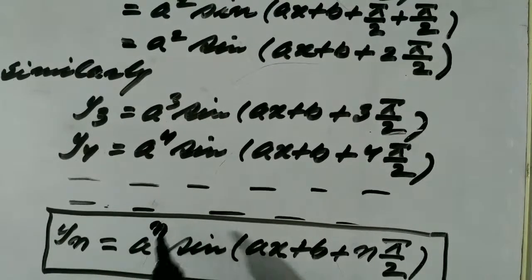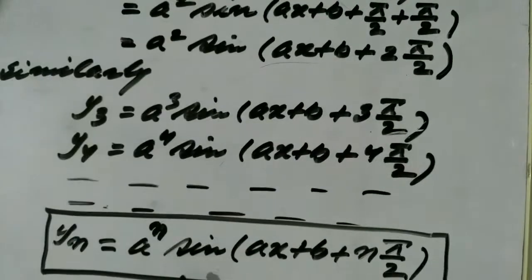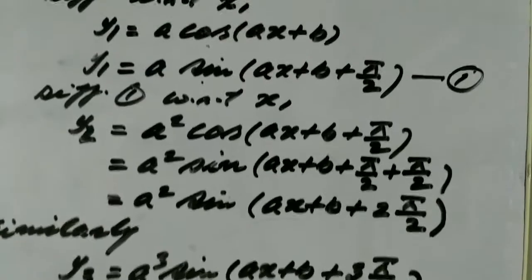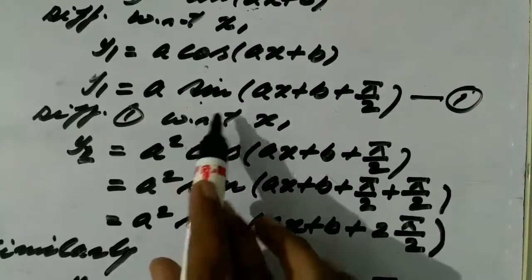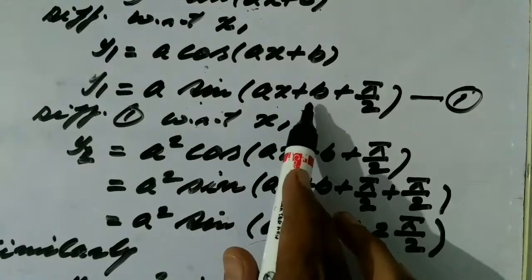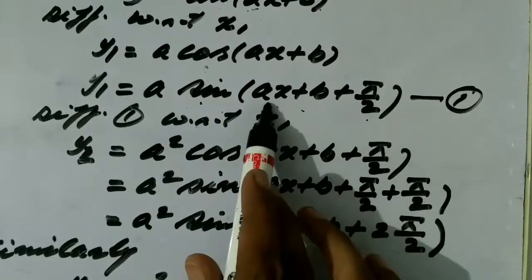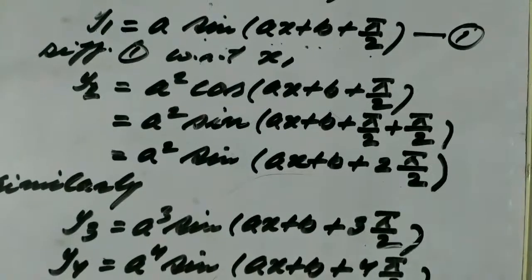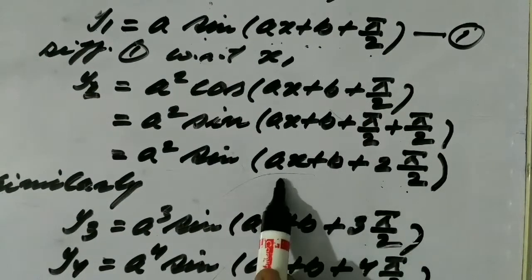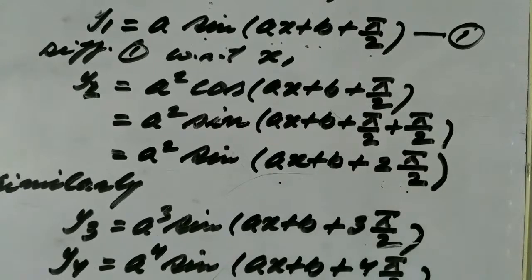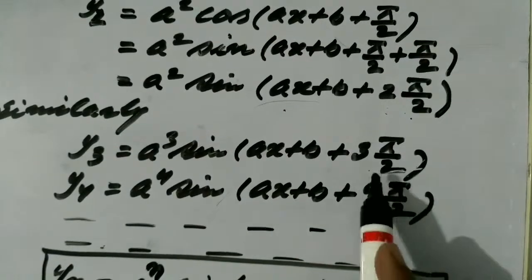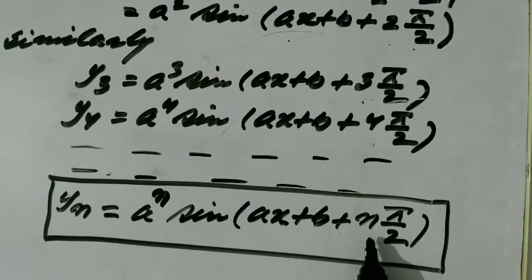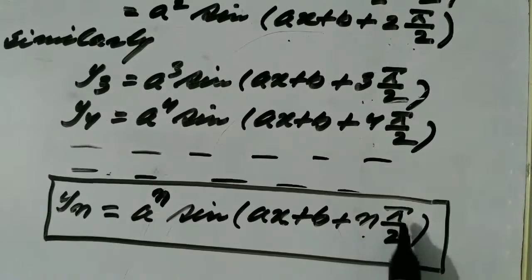Now take the analogy in the trigonometrical ratio. In the first derivative, in the angle we observe there is 1 π/2 in addition to ax+b. In the second derivative there is 2 π/2 in addition to ax+b. In the third derivative 3 π/2, in the fourth derivative 4 π/2, so in the nth derivative it should be n π/2.